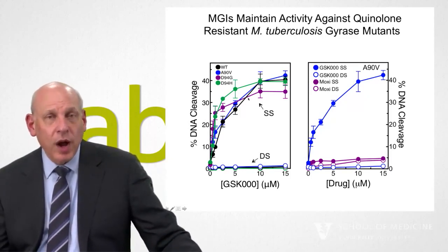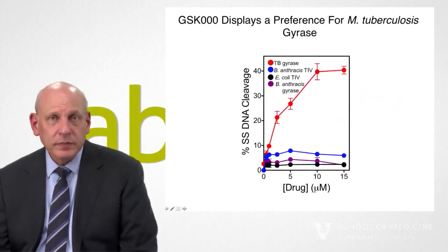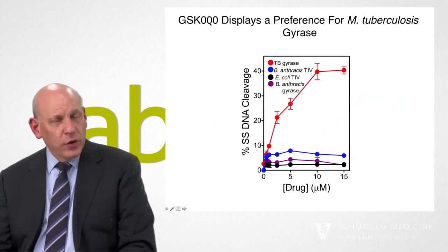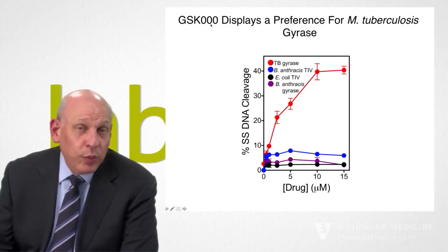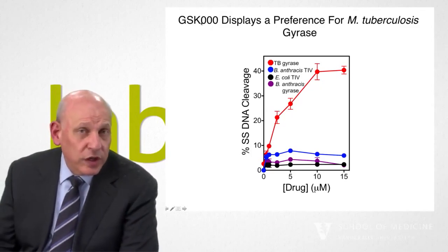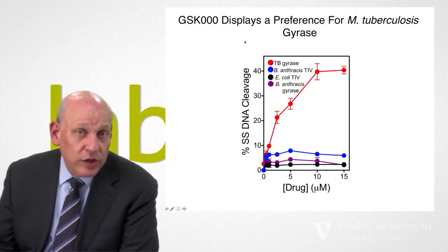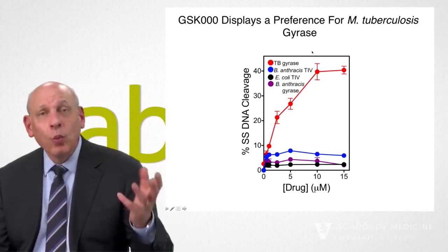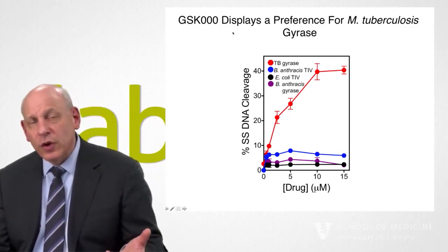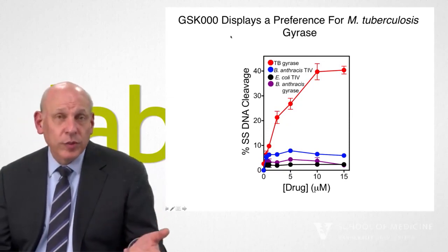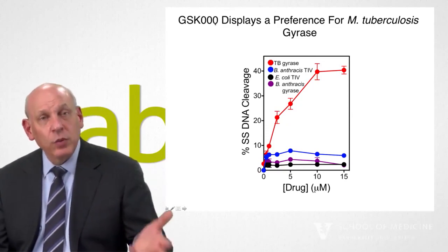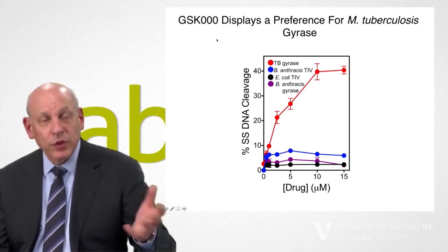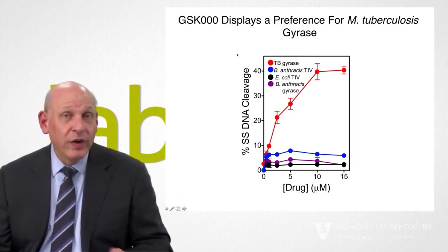Another thing we wanted to look at: since NBTIs work pretty poorly against tuberculosis, we asked what happens with the MGIs that have been selected specifically for working against tuberculosis. Most of what I'm showing you is with GSK000 as the primary example, but we've also done these experiments with GSK325 and GSK126 as well.